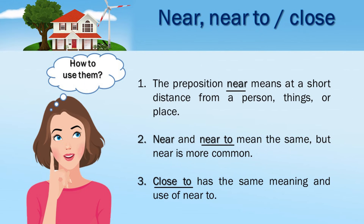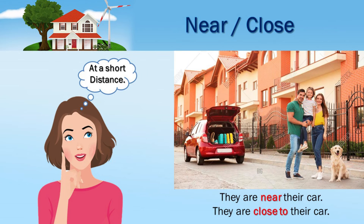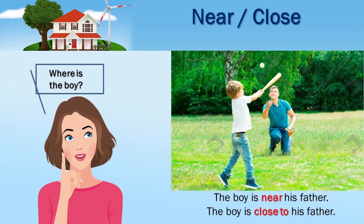Near, near to, close: 1. The preposition 'near' means at a short distance from a person, thing, or place. 2. 'Near' and 'near to' mean the same, but 'near' is more common. 3. 'Close to' has the same meaning and use as 'near to.' They are near their car. They are close to their car. Where is the boy? The boy is near his father. The boy is close to his father.